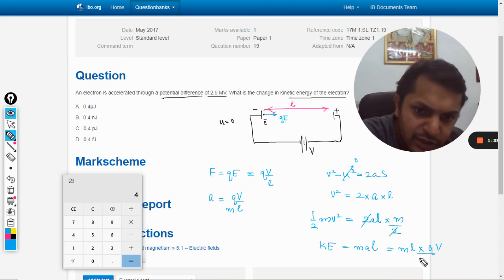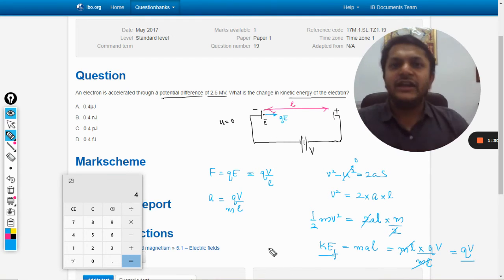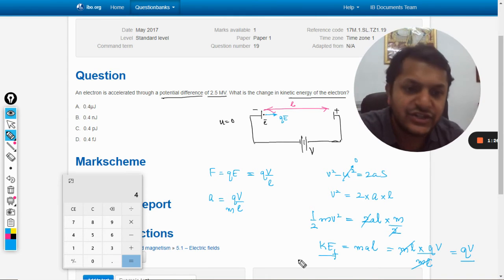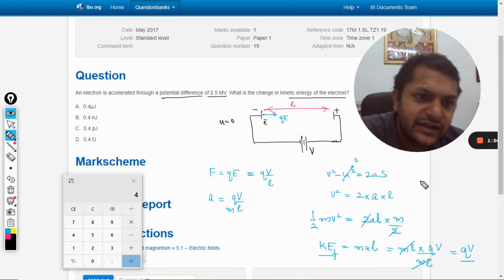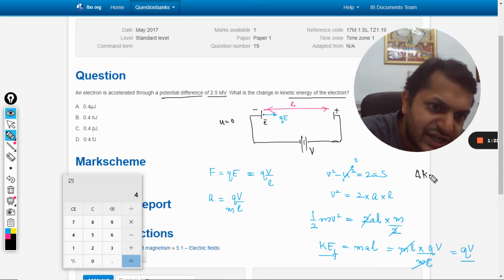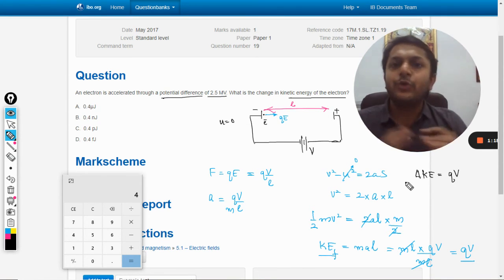So from here I directly jump to this conclusion that change in kinetic energy is given by the product of charge and V, the potential difference. So it will be the charge Q into delta V because delta V is the potential difference that is applied across the electrode. So this is a very simple formula.